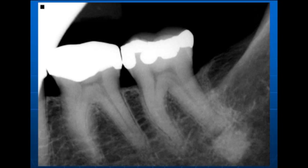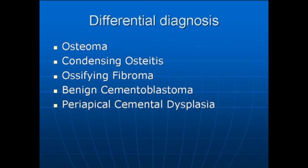One term for the opacity would be osteoma — osteoma is a very aggressive cancer of the bone that happens in the maxilla and the sinus. The next one would be condensing osteitis, which is low-grade inflammation in the nerve that causes the bone to condense. And the next one is ossifying fibroma, which is also a type of cancer — it's very aggressive.